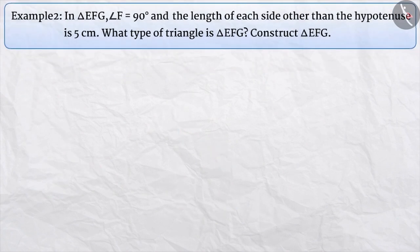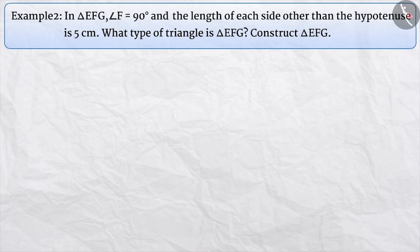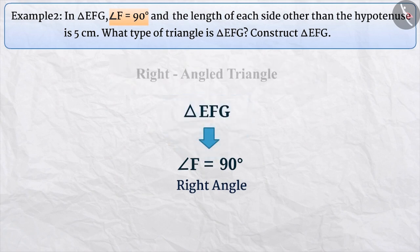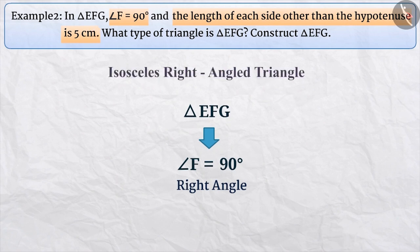Example 2: In triangle EFG, angle F is equal to 90 degrees and the length of each side other than the hypotenuse is 5 cm. Since angle F is a right angle, triangle EFG is a right-angled triangle. Since the two sides other than the hypotenuse are equal in length, we can say that it is an isosceles right-angled triangle.